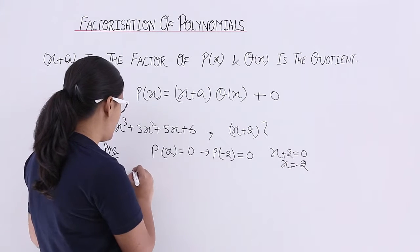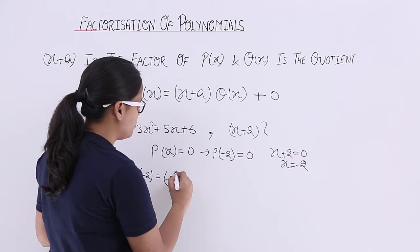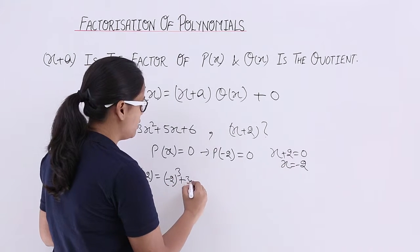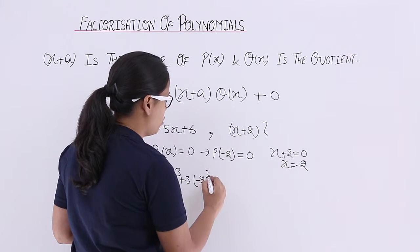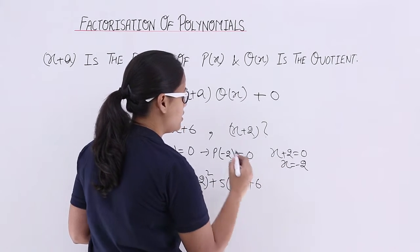Now let's check on this. P(-2) = (-2)³ + 3(-2)² + 5(-2) + 6.